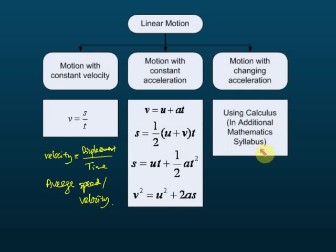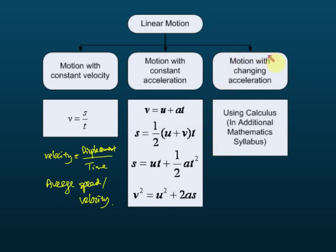There's a chapter in Additional Mathematics that covers this — the second-to-last or last chapter. You'll use calculus to solve problems involving acceleration, velocity, and displacement. But in physics, you can forget about changing acceleration. Physics only requires the first two: motion with constant velocity and motion with constant acceleration.